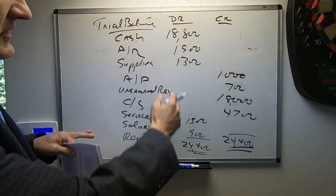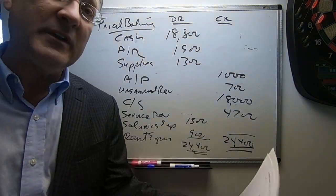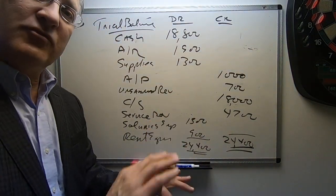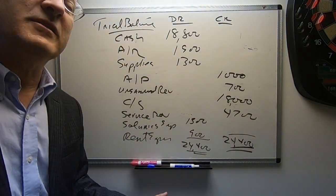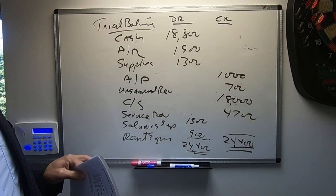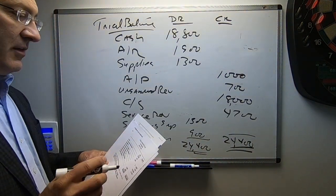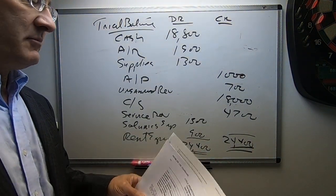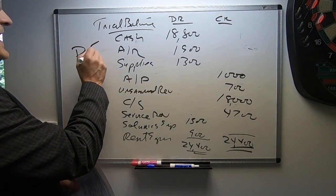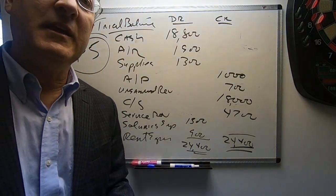A trial balance is a summary of all the net balances from our T accounts, with debits and credits. What we're going to see in the next chapter is that we're going to use this trial balance to then prepare our financial statements. That is problem five from the Kimmel book. Thank you.